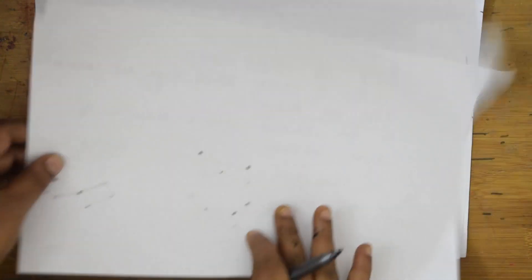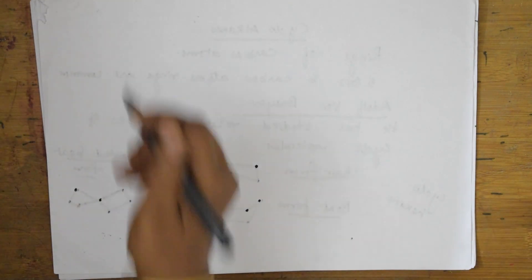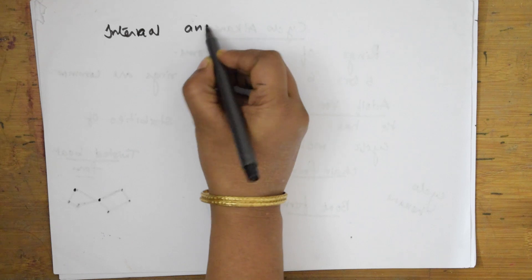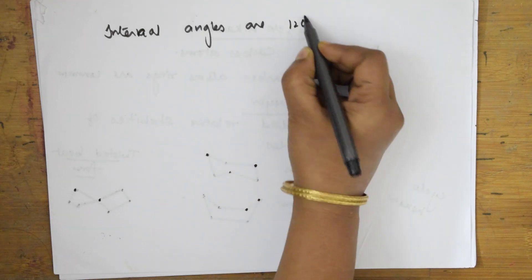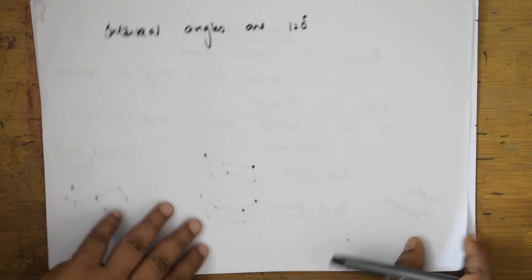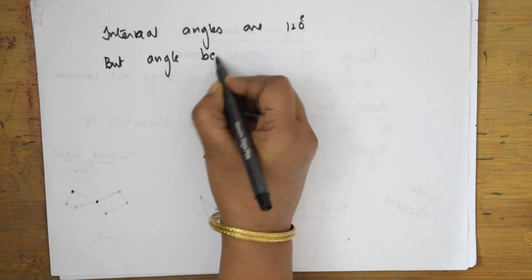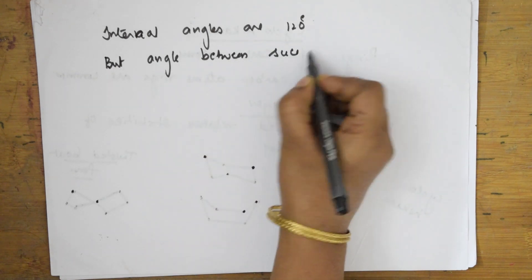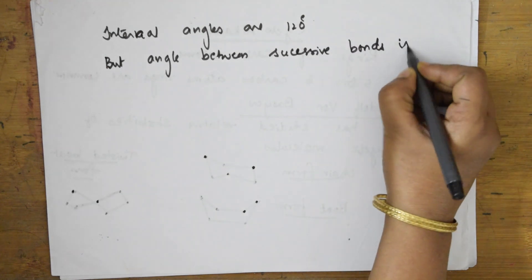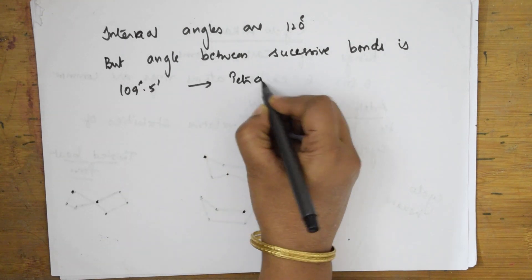When I speak about the internal angles, the internal angles between the atoms is 120 degrees. But the angle between successive bonds, as seen here, is 109 degrees — just like a tetrahedral angle.